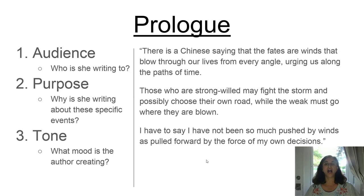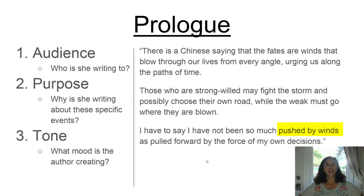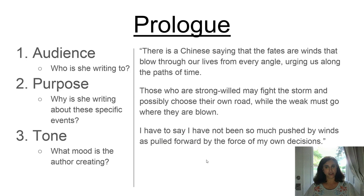Some of the key words in that quote are "possibly choose." While fate means we have a predetermined path in life, she points out that she has a choice. Her choices might be limited, so she says we might possibly choose our own road — the road being our path in life. But she also mentions that the weak do not have that. When she describes herself, she's not saying she's pushed by winds — in other words, she's not weak — but she's pulled forward. Fate does have a role in her life, but that fate mixed with free will has pushed her to making hard decisions.